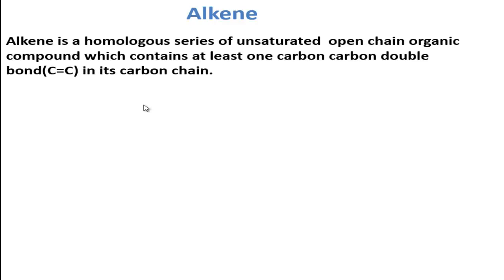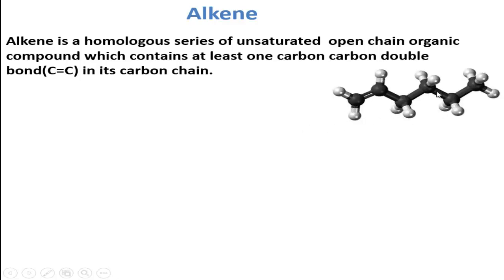Alkene is a homologous series of unsaturated open chain organic compound which contains at least one carbon-carbon double bond in its carbon chain. That means in the carbon chain of an organic compound, if there is present at least one carbon-carbon double bond — there may be more than one — then that organic compound is called alkene. Follow here: this black chain is a carbon chain, and here there is present a carbon-carbon double bond.